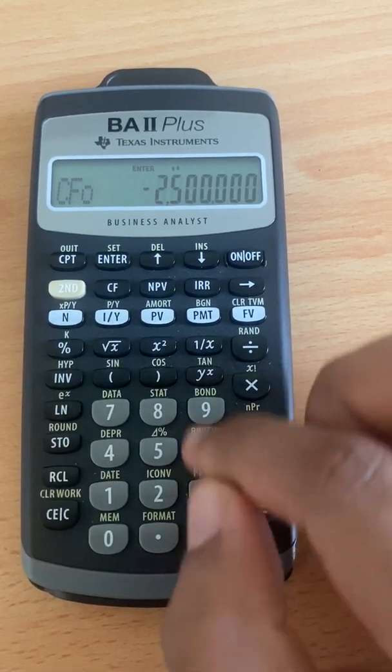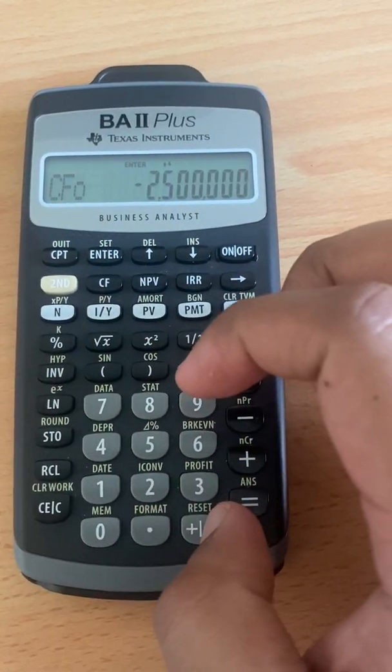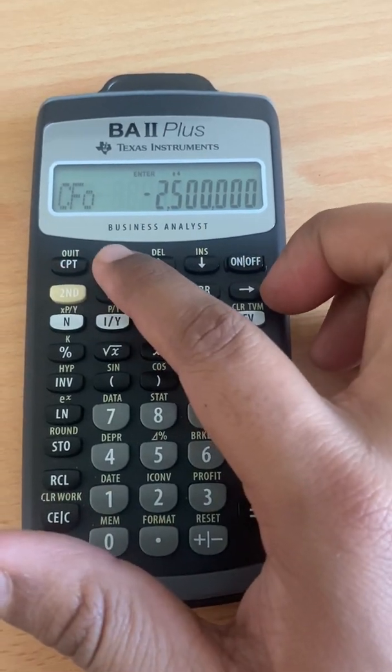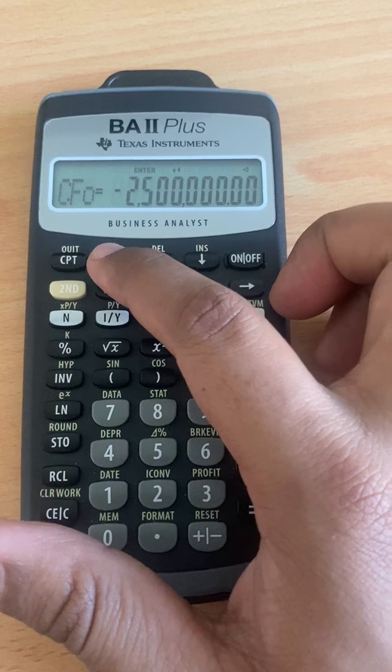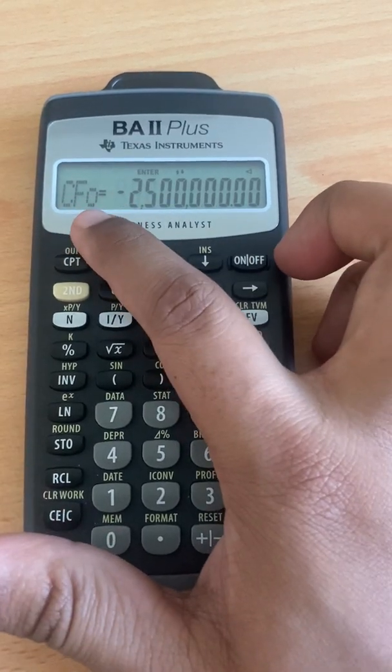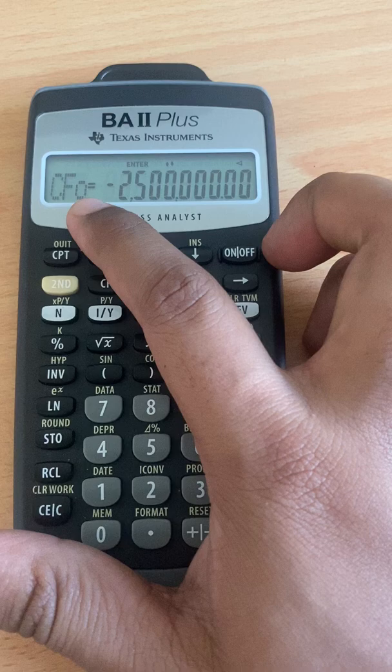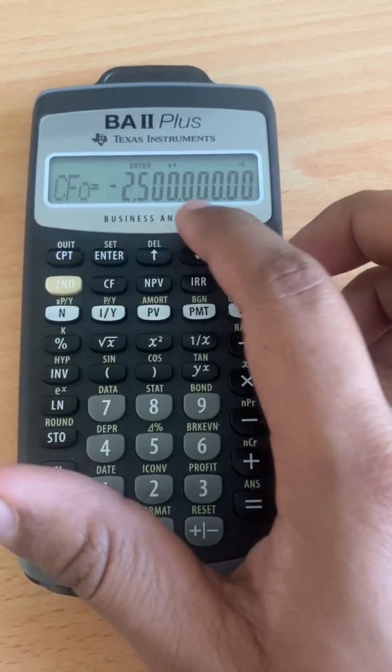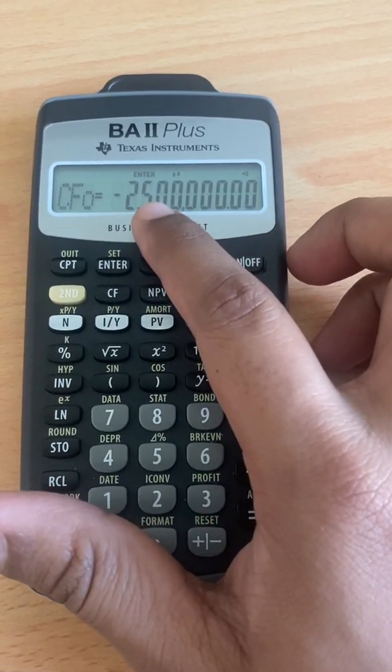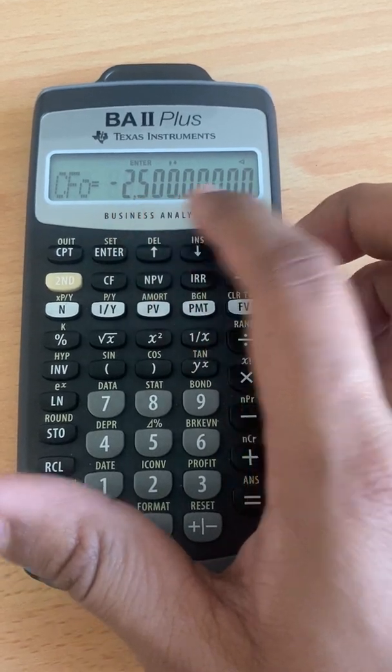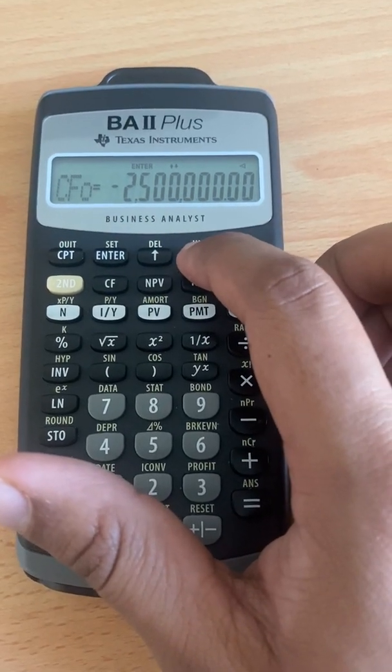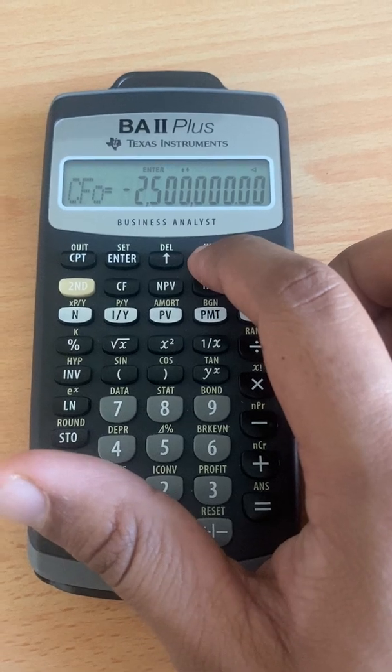We press 2.5 million and then put negative because it's an initial cost. This is a cash outflow, so you press enter. CFO is for cash flow at period 0. Negative 2,500,000 is the initial cost for project A.